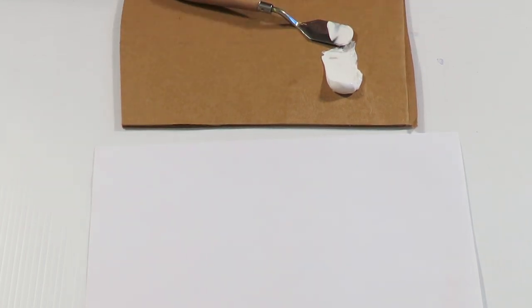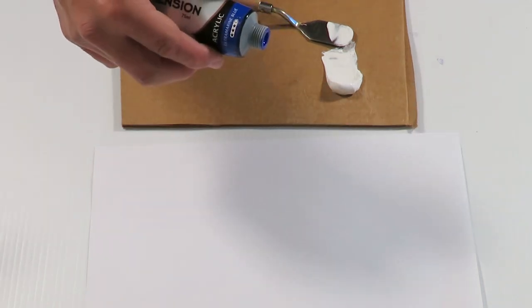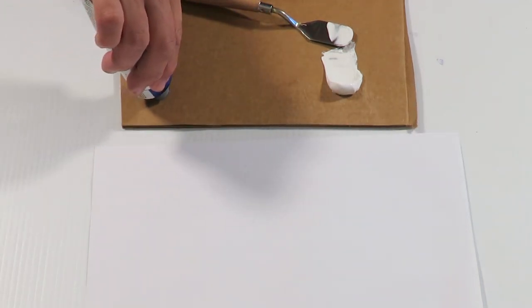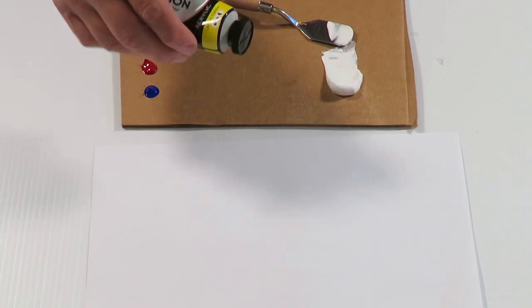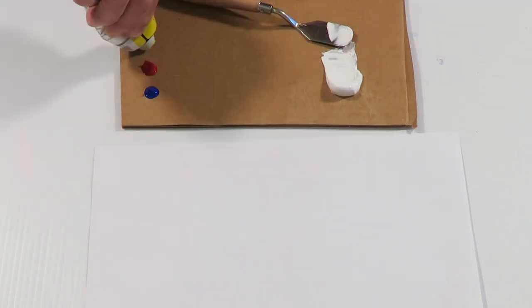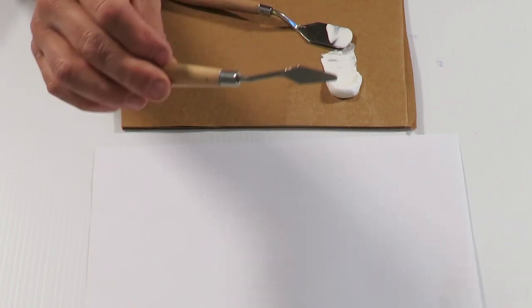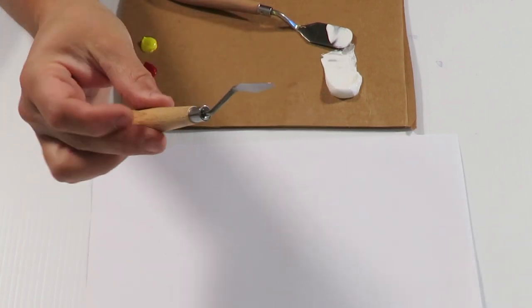And then I've just got a small amount of ultramarine blue, put that there. Some permanent red and just some basic yellow. Now today I'm using a very tiny little palette knife.